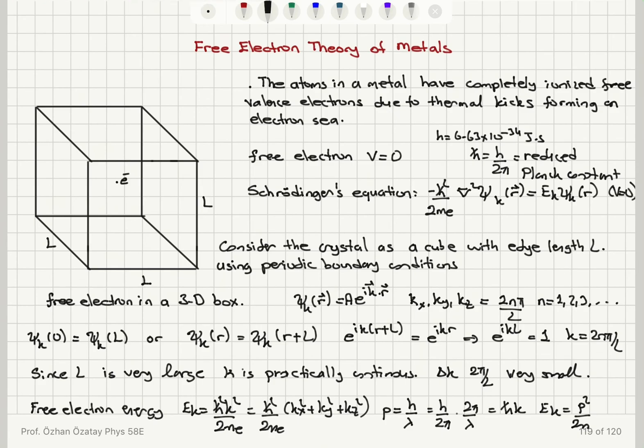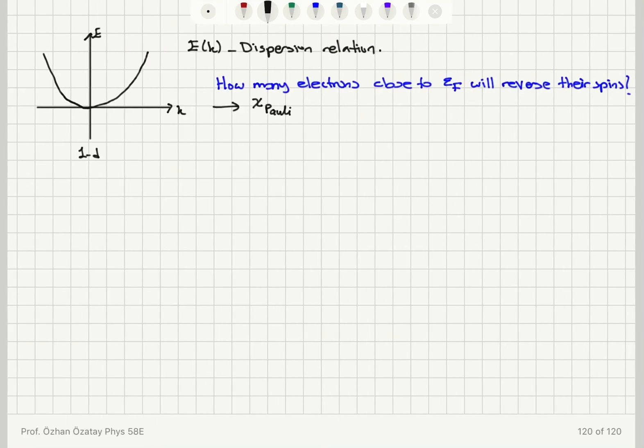Since L is very large you can think of k as a continuous variable. The free electron energies are ℏ²k²/(2m), which is p²/(2m), the kinetic energy. The E versus k relationship is parabolic, called the dispersion relation. Our main goal is to calculate how many electrons close to the Fermi level will reverse their spin to contribute to Pauli paramagnetism.